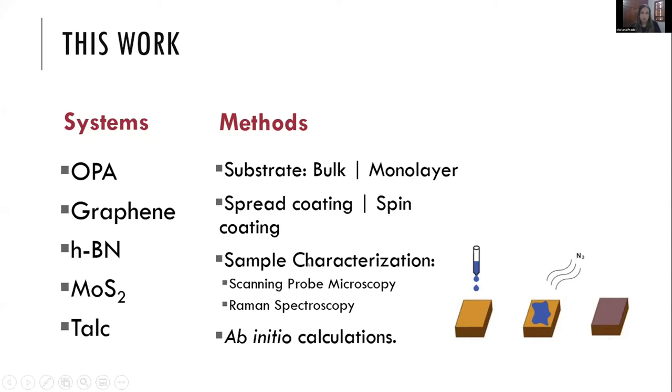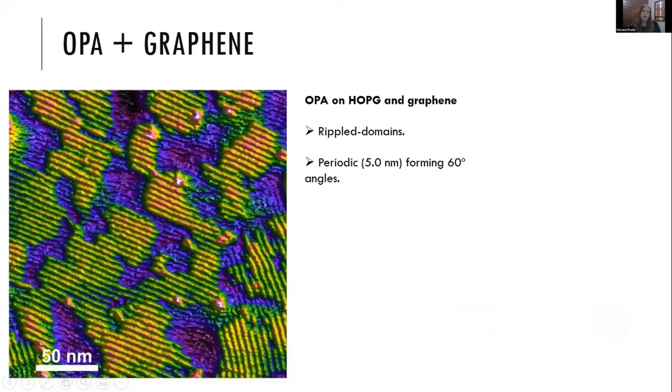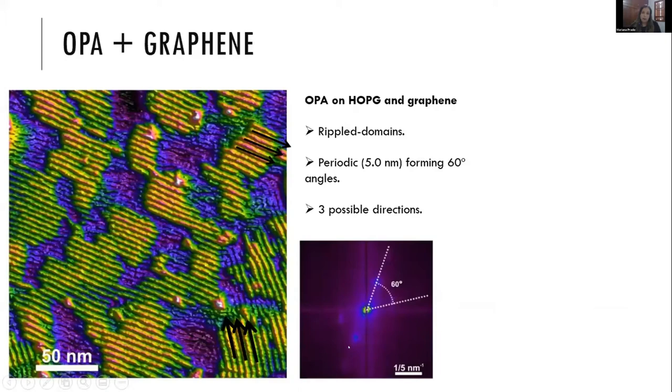Let's start with OPA and graphene. This first image is the structure formed by the molecule on top of graphite HOPG. Under standard AFM conditions, ripple domains form. They are periodic with a 5 nanometer period between the stripes, and the domains form 60 degree angles between each other. This is the fast Fourier transform of that image where you can see clearly the periodic structures and the angles. 5 nanometers is exactly twice the length of the OPA molecule.